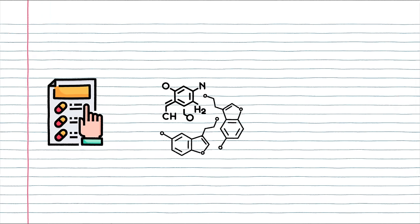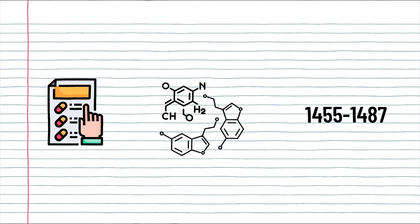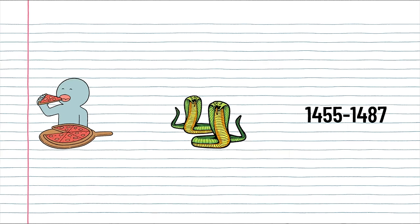Step one is to visualize. Our brains remember images much better than numbers or words. Like when I say Apple, you instantly think of the red fruit, or maybe you think of the iPhone — either way, your brain is not thinking of the text A-P-P-L-E. So step one is to take everything you need to memorize and turn it into an image, whether it's a list of drugs, steps to a chemical reaction, or dates to a battle — everything can become an image.